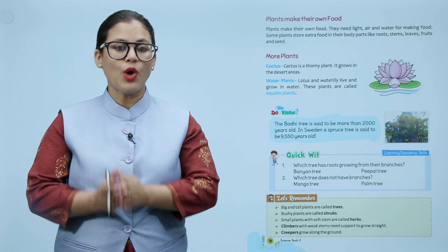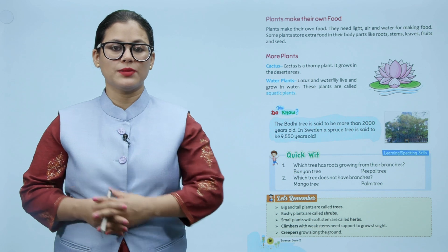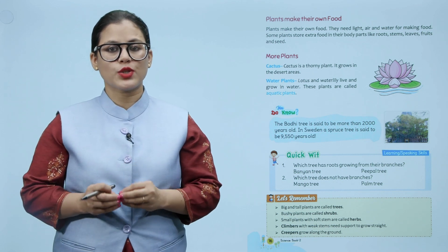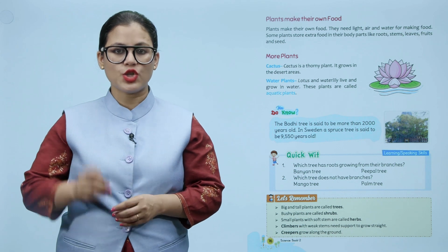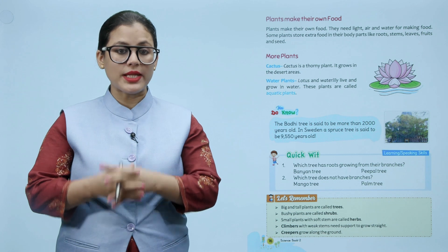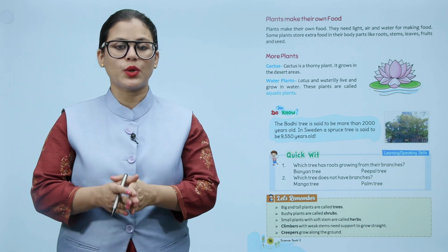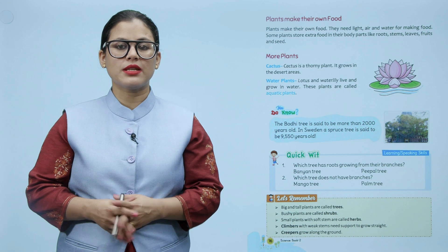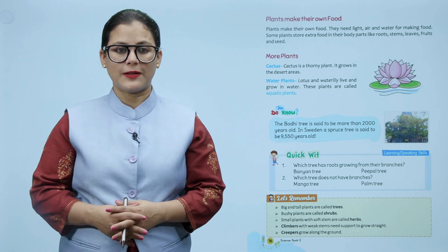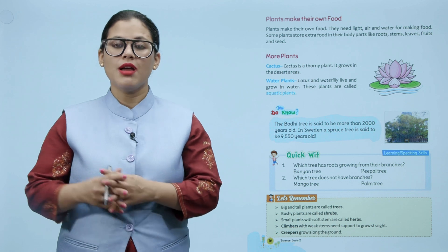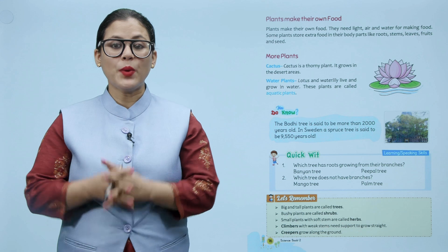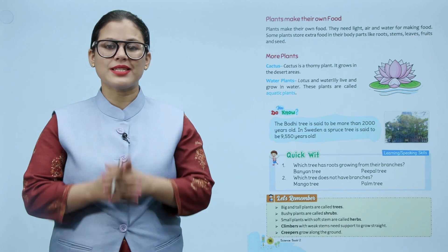Let's remember: Big and tall plants are called trees. Bushy plants are called shrubs. Small plants with soft stems are called herbs. Climbers have weak stems and need support to grow straight. Creepers grow along the ground. Bade aur tall plants ko trees kaha jaata hai, jabki bushy plants ko shrubs. Chote plants jinki soft stem hoti hai, unhe herbs kehte hain. So children, I hope you understand this chapter. Practice by yourself!